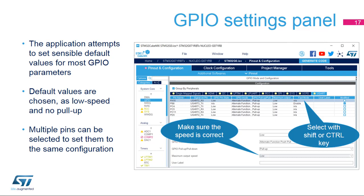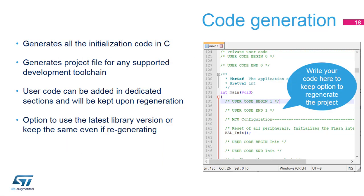Use tabs to get pin groups dedicated to specific peripherals. Note that settings applied during initialization can be modified during run time, but that is outside the scope of the STM32CubeMX tool. When all inputs, outputs and peripherals are configured, the code is ready to be generated.